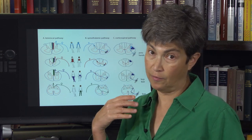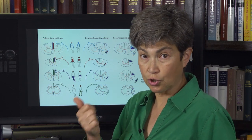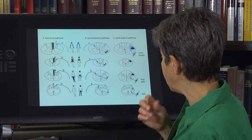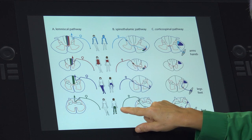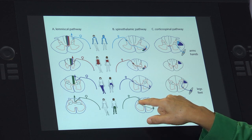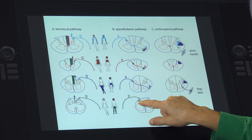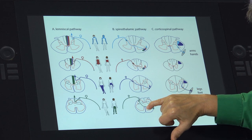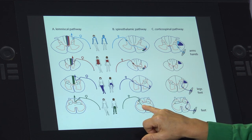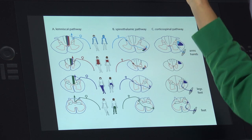Now we're going to go on to the spinothalamic pathway, also known as the anterolateral in more clinical speak. This is a pathway that carries information about pain and temperature, crude touch, and sensual touch. This information comes in at every single level and synapses onto a dorsal horn neuron in the very superficial dorsal horn in an area called the marginal zone. That dorsal horn neuron then sends an axon across in the ventral commissure, just below the central canal, over to the ventrolateral funiculus, and then turns to go rostrally.